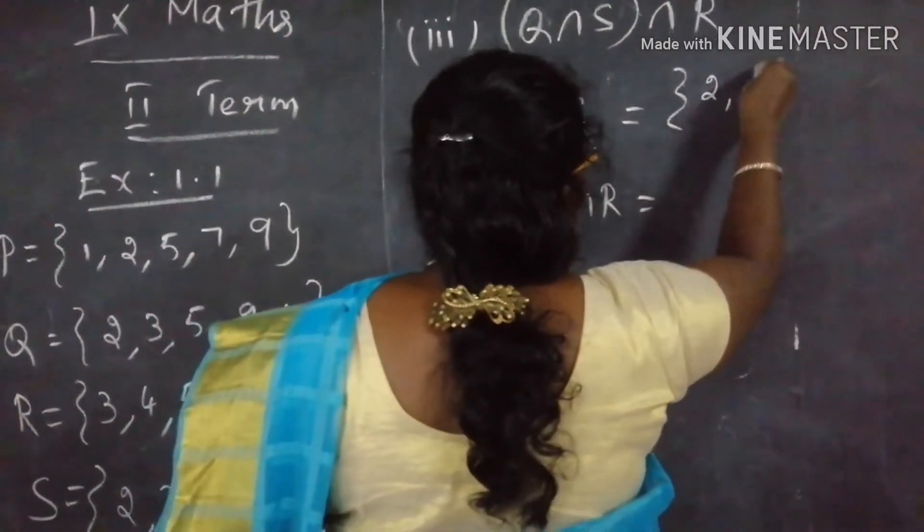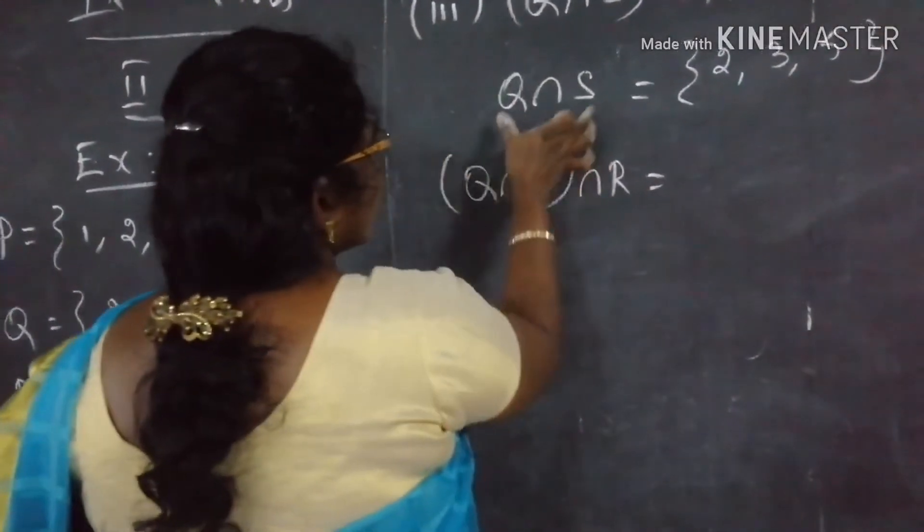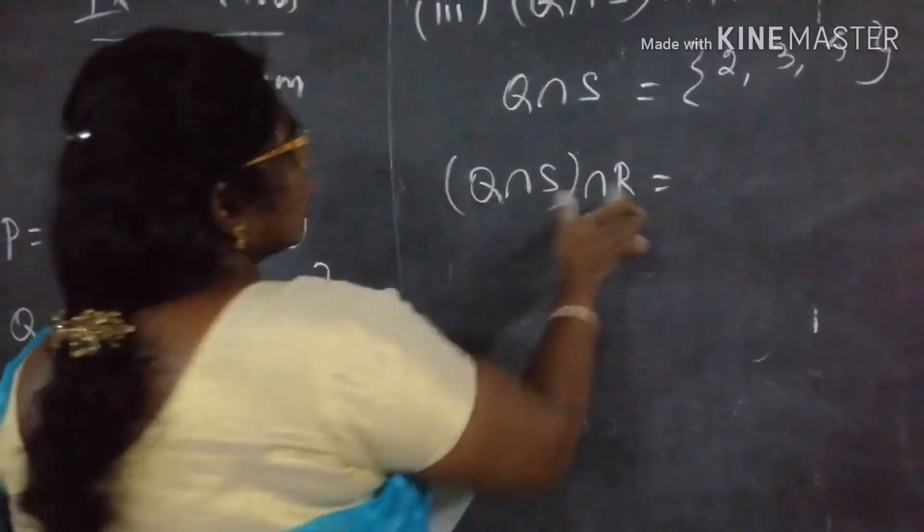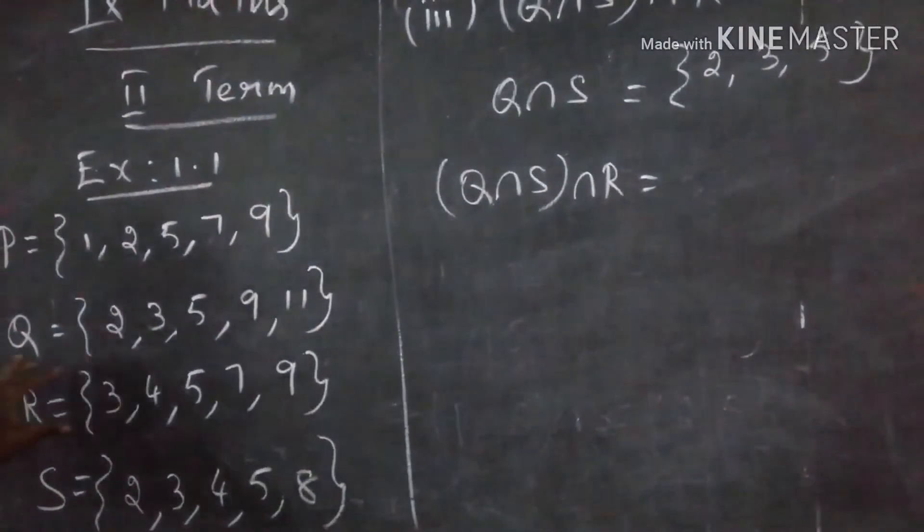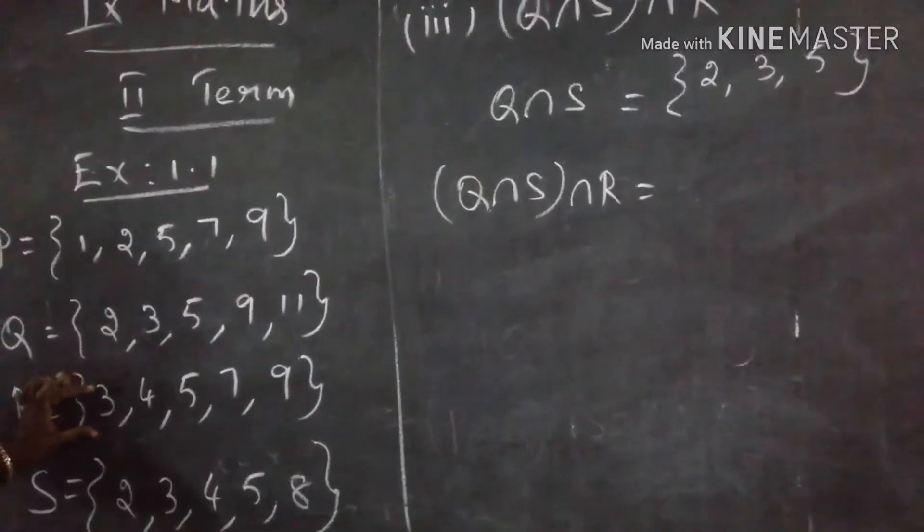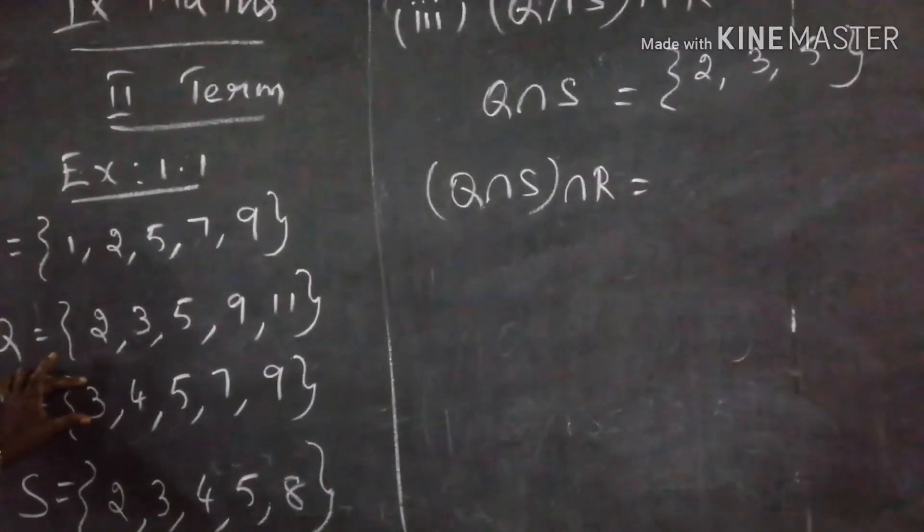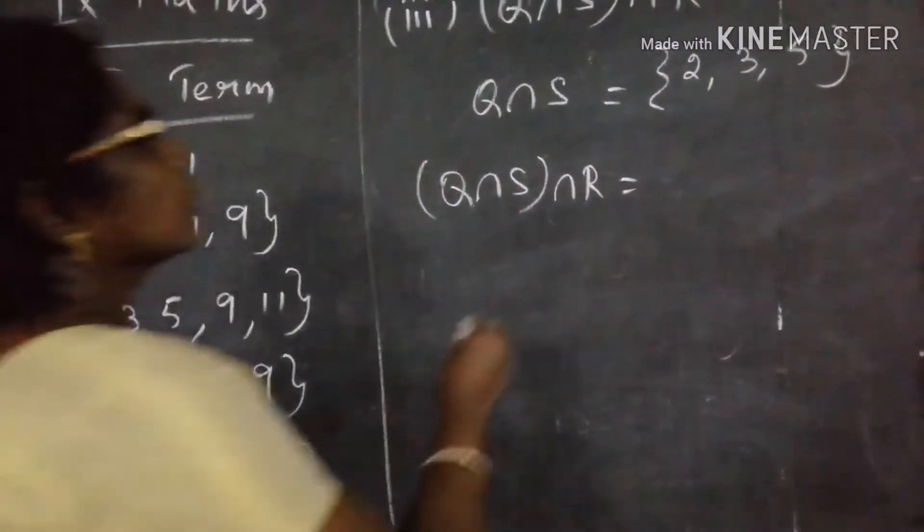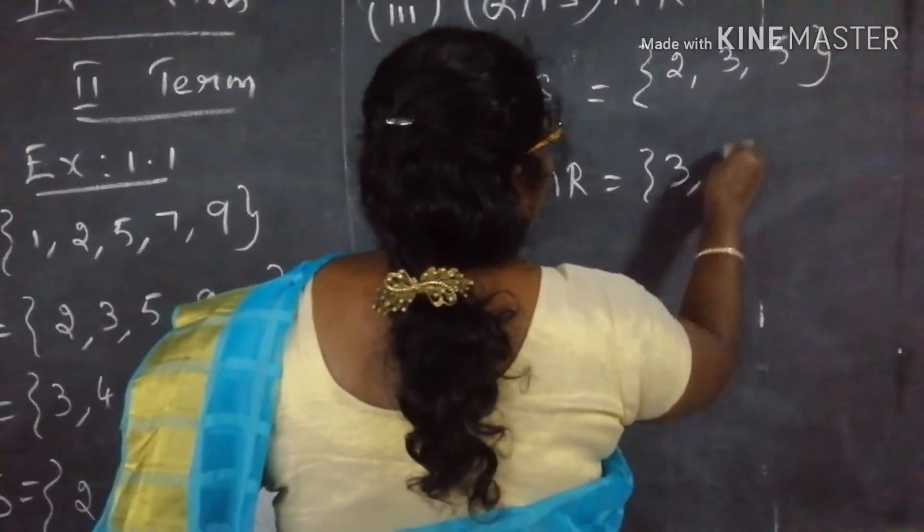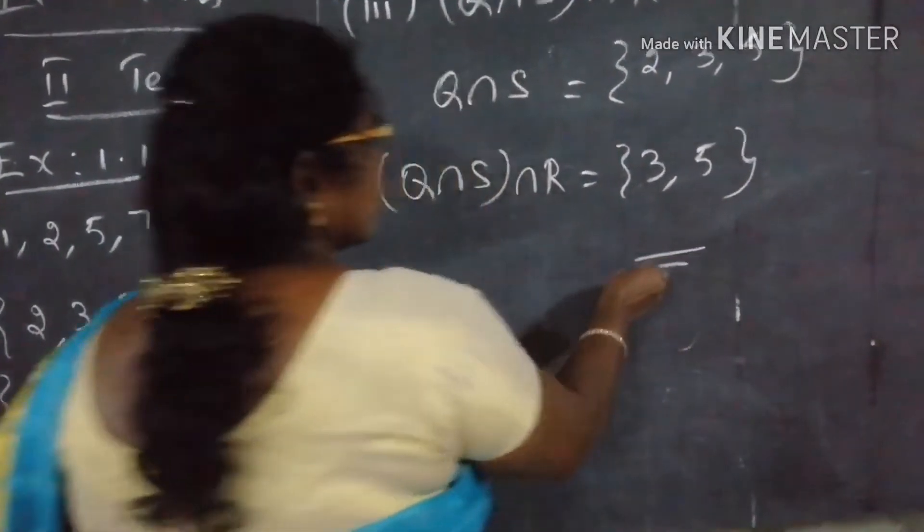2, 3, 5. Q intersection S. Q intersection R: 2, 3, 5, 3, 5, 3, 5. The answer.